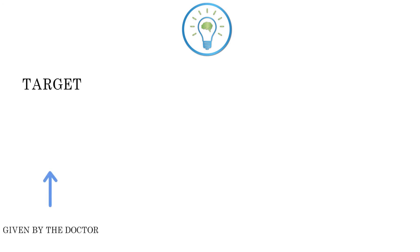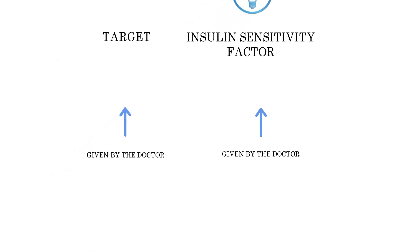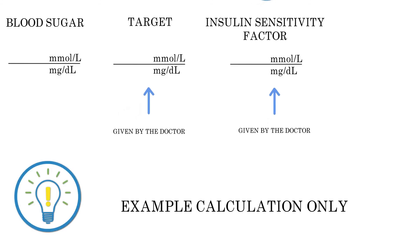The second piece of information is the insulin sensitivity factor, also provided to you by your doctor. In this example, we will demonstrate the calculation in both millimoles per liter and milligrams per deciliter. Let's presume you have a blood glucose reading of 16 mmol/L (or 288 mg/dL), a target blood sugar of 6 mmol/L (or 108 mg/dL), and an insulin sensitivity factor of 6 mmol/L.